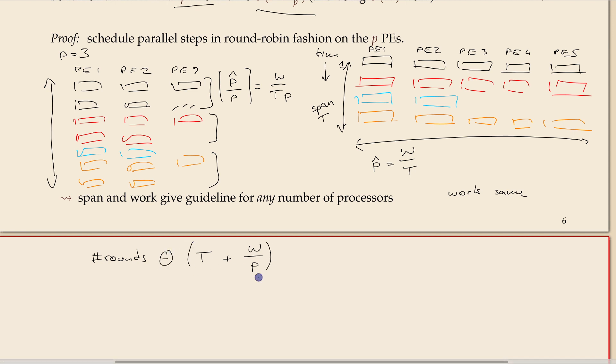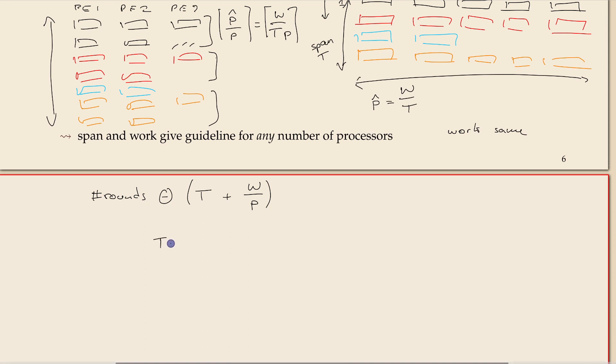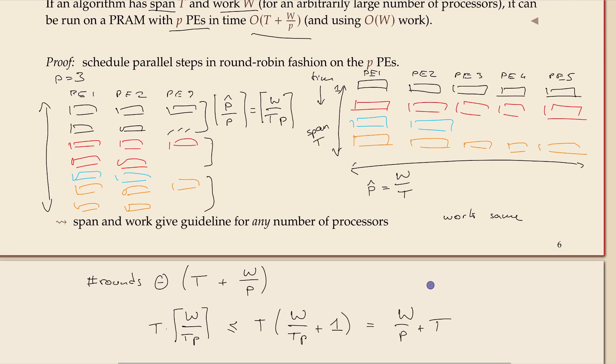But in big-O that's the same. Like here, the rounding should be there if you want to spell this out. We would have T times, and then W divided by T times p, rounded up. But we can upper bound this by that thing plus one. So you see here again, it's W divided by p plus T, and we get another plus T for the rounds where it's much smaller. I don't know if the calculation was very clear...